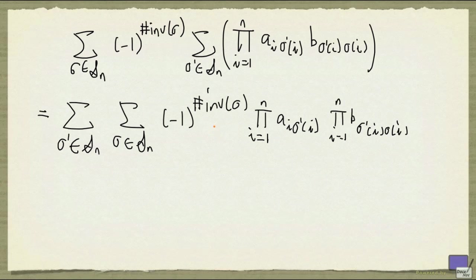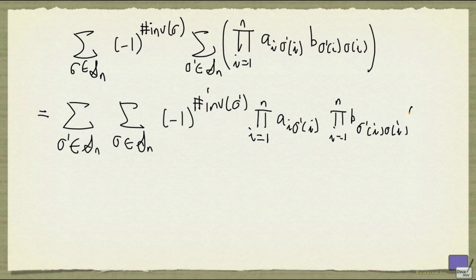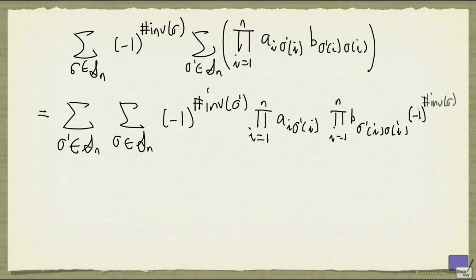Now, what I'm going to do is, I'm going to turn this into a sigma prime, and I cannot just do that. I have to undo what I've done. So I'm going to have a term, the original term minus 1 to the number of inversions of sigma, and then I'm going to multiply this by the following.